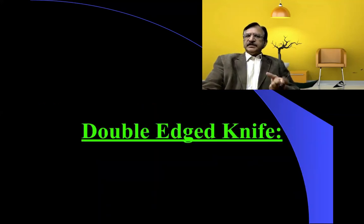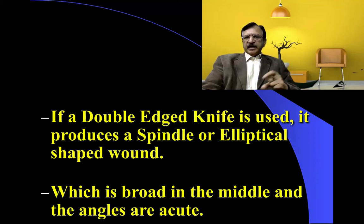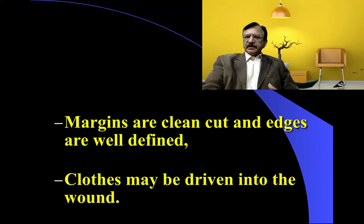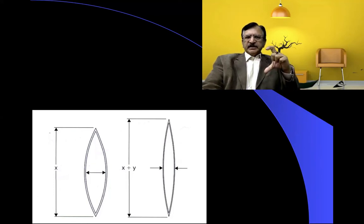The weapon should be examined during autopsy to match the shape of the bruise or abrasion around the stab wound with the hilt. If the weapon is a double-edged knife, it produces a spindle or elliptical shaped wound which is broad in the middle with acute angles. Margins are clean cut, edges are well defined, and clothes may be driven into the wound. This is a diagrammatic representation — broader in the middle with acute, sharply defined angles.